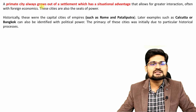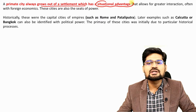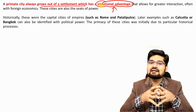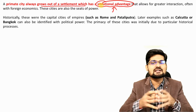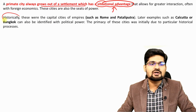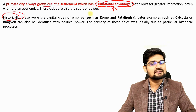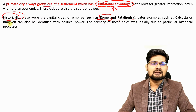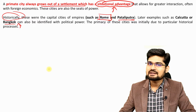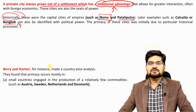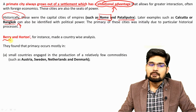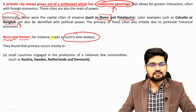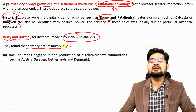A primate city always grows from a settlement with situational advantages — locational, historical, and geographical. Historical examples of primate cities include Rome, Pataliputra (capital of the Magadha Empire), and later Calcutta and Bangkok, which developed in colonial times as the biggest cities in their countries. Brian Berry and Houghton made country-wise analysis to understand the levels of primacy and found it occurs in particular cases.